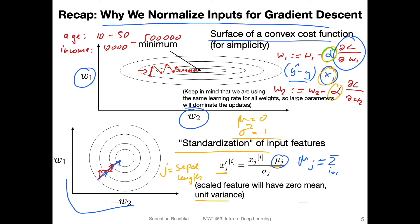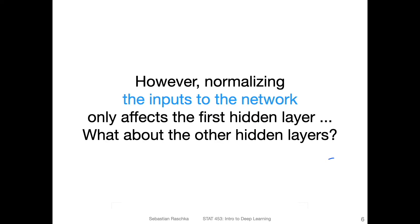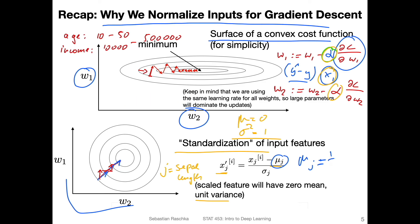One over n, sum from i equals one to n, and then x_ij. So we will just compute the mean across this feature. And here we do the same thing for the standard deviation.